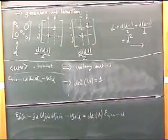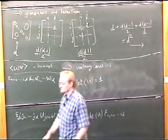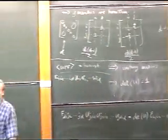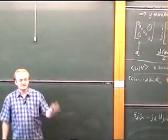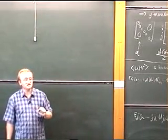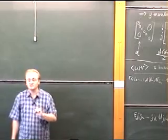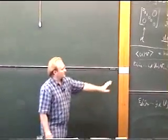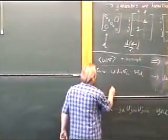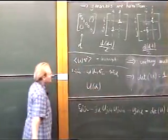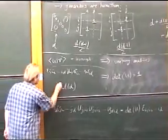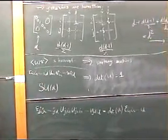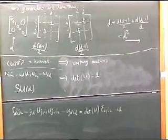Yesterday we started with O(d), and when we wanted to say that we were dealing with matrices with determinant equal to 1, we appended an S. We said the S stood for 'special,' and those matrices were special because they had determinant equal to 1. In exactly the same way, we started off with U(d), and we are again going to consider matrices with determinant equal to 1, so we again append an S. We are now talking about the group SU(d).